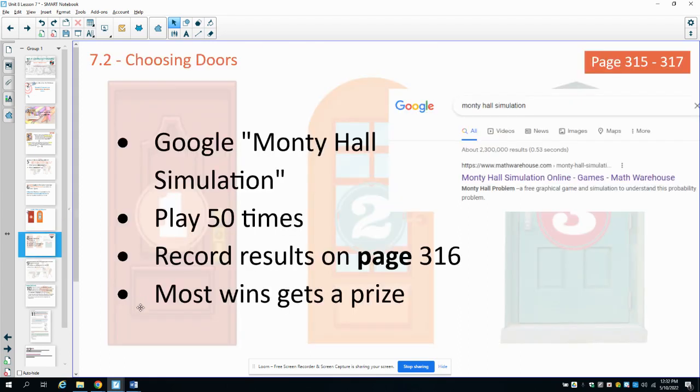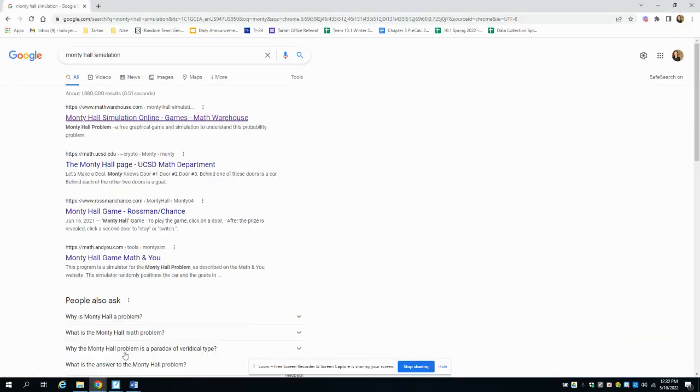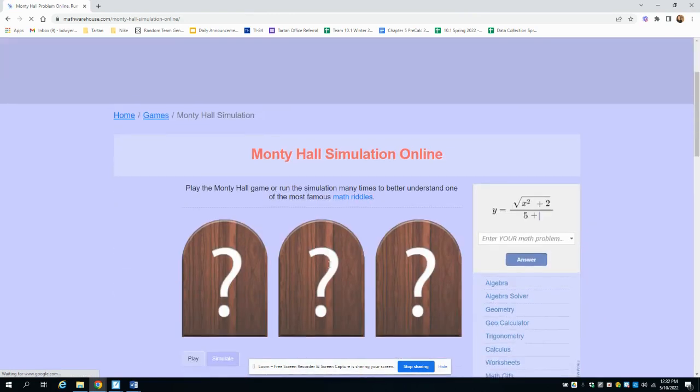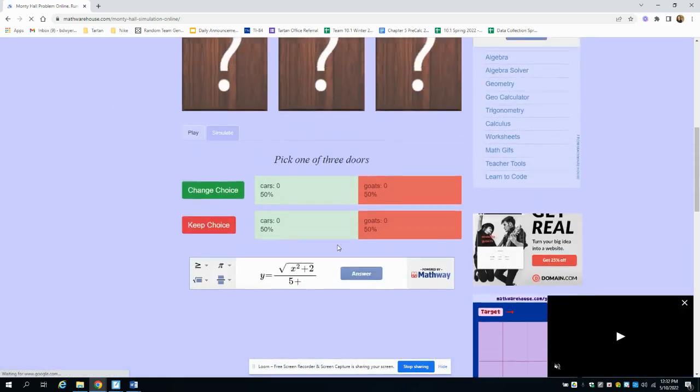So go ahead and Google Monty Hall simulation and select this first link where it says math warehouse. And I will show you here what it looks like. So on this game, what you're going to do is, behind one of these doors is a car, behind the other two is a goat.